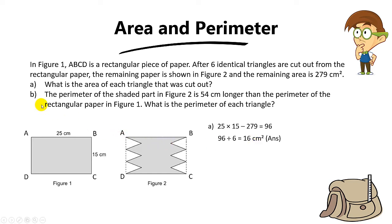Now for part B, the perimeter of the shaded part in figure 2 is 54 cm longer than the perimeter of the rectangular piece of paper in figure 1. They want to find the perimeter of each triangle. So the question says that the perimeter of this figure is basically 54 cm longer than the perimeter of this figure.